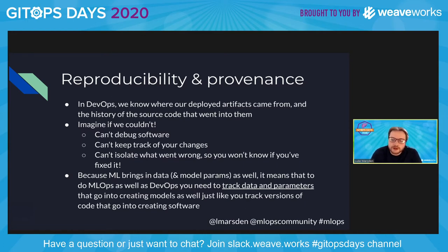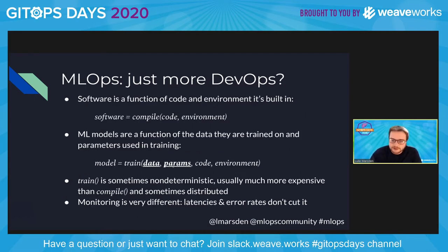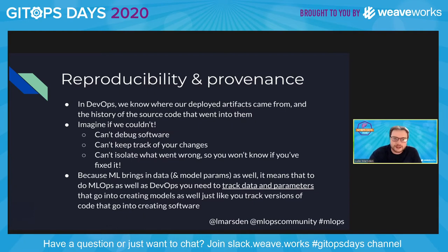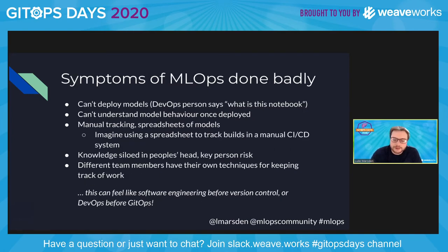There's additional complexity in ML around reproducibility and provenance, because it's not just the code that goes into training the model — you've got data and parameters as well. You need to be versioning your data, versioning your parameters, and versioning your training runs, just like you track versions of code in regular DevOps. And keeping track of versions and provenance of data is harder than doing it with source code.